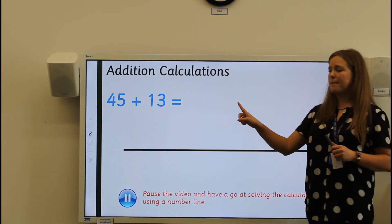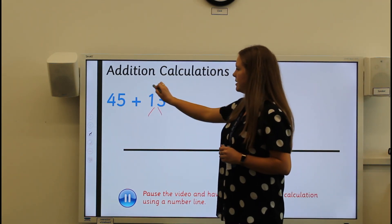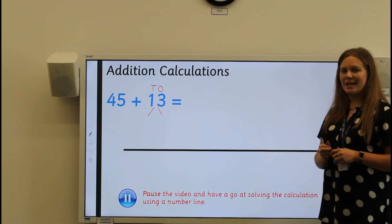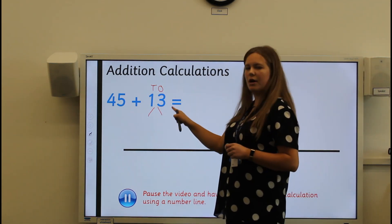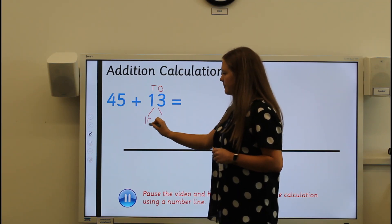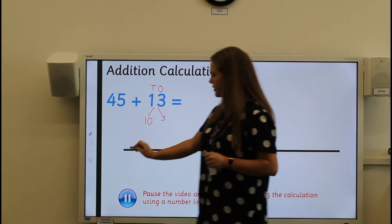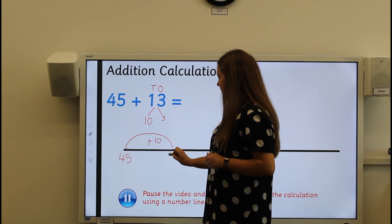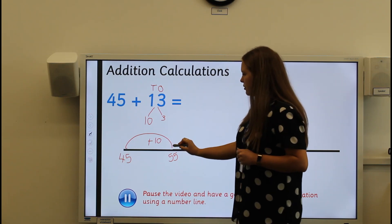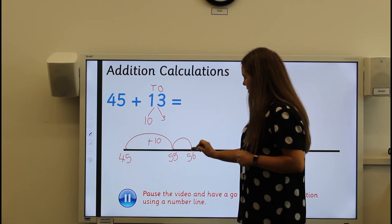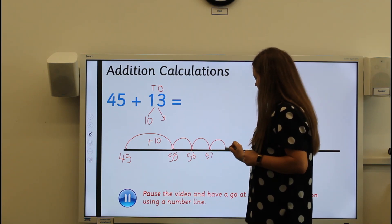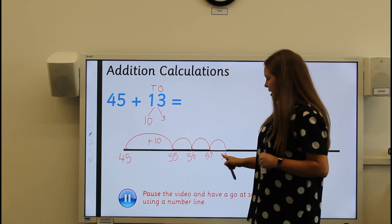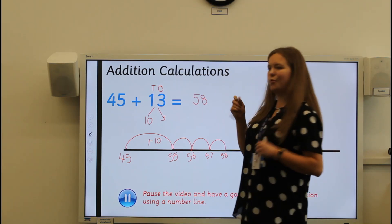I'd like you to pause the video and have a go at partitioning the second number into your tens and ones, then use the number line to add them together. Well done. When we partition thirteen, we get one ten and three ones. Starting at forty-five, we do a jump of ten: forty-five add ten equals fifty-five. Then three jumps of one: fifty-six, fifty-seven, fifty-eight. Some of you might be able to do a jump of three from fifty-five to get to fifty-eight. My answer is fifty-eight.